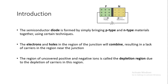Diode is the first and simplest device we discuss in this course, which is made by joining p-type and n-type material. We have already discussed how to construct p-type and n-type material. These are made by the process of doping. P-type materials are formed by adding trivalent impurity to the base material, while n-type materials are formed by adding pentavalent impurity to the base material.